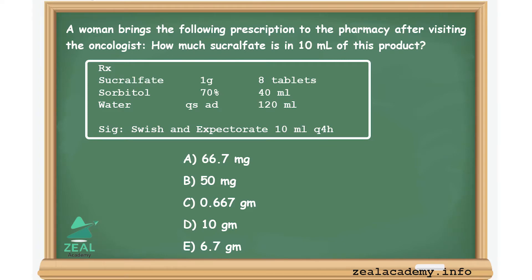A woman brings the following prescription to the pharmacy after visiting the oncologist. How much sucralfate is in 10 ml of this product? Sucralfate 1 gram, 8 tablets; sorbitol 70%, 40 ml; water quantity sufficient to 120 ml. Signature: swish and expectorate 10 ml every fourth hourly. Options: A) 66.7 mg, B) 50 mg, C) 0.667 gram, D) 10 gram, E) 6.7 gram.